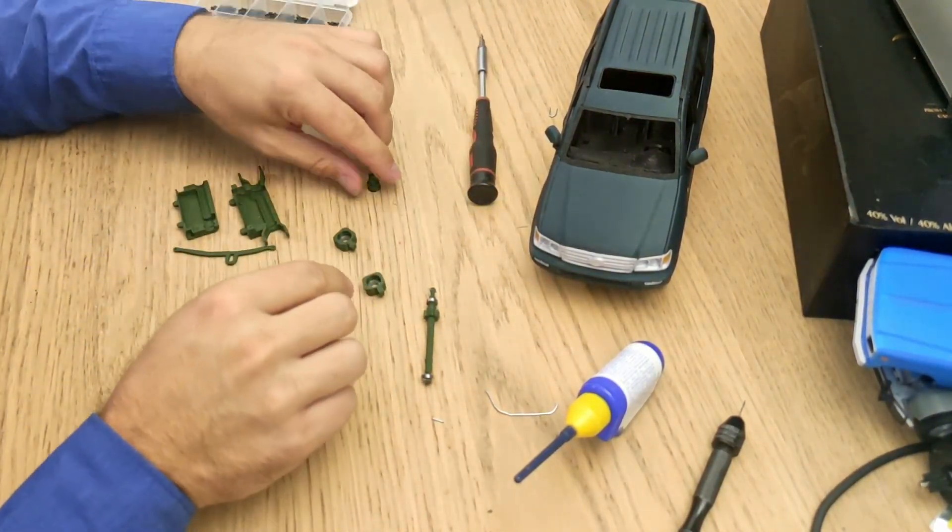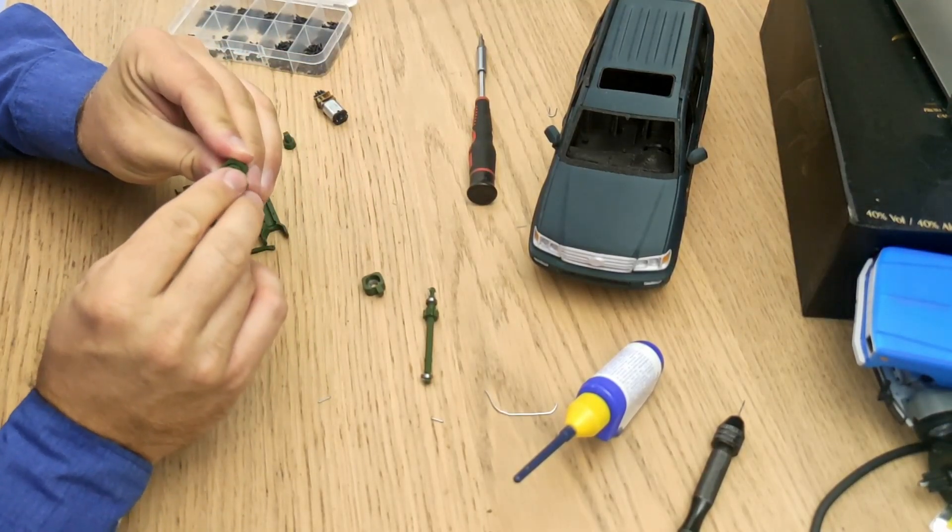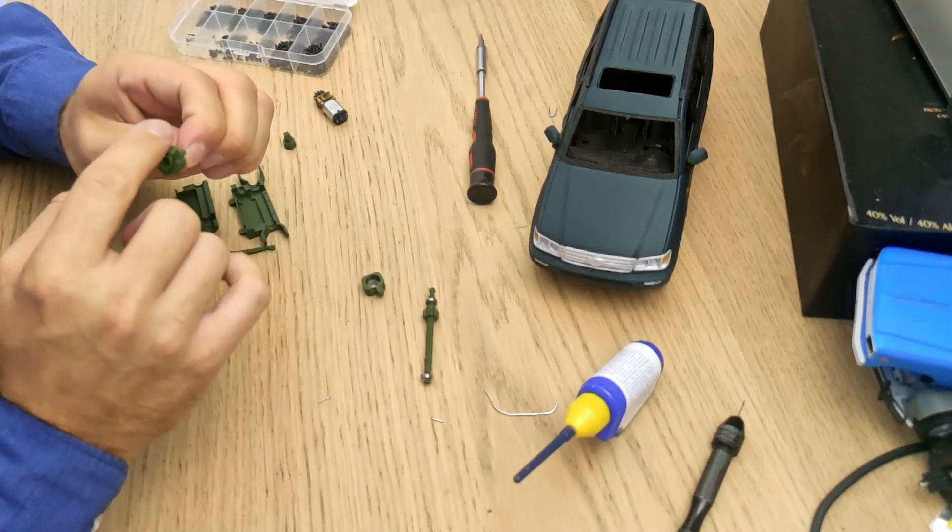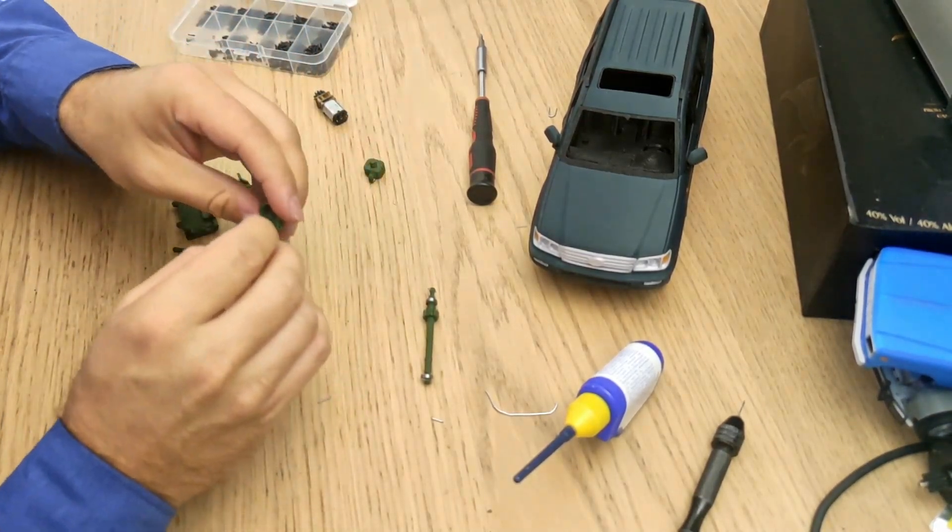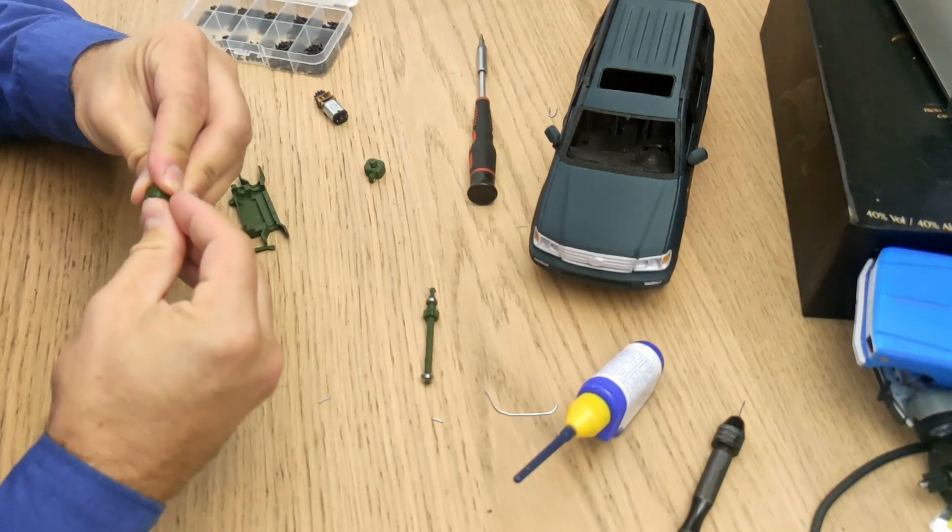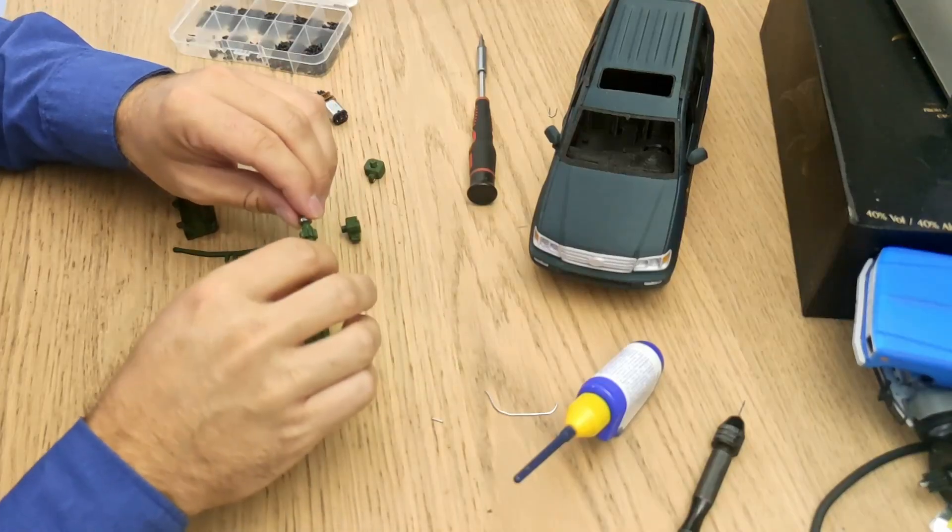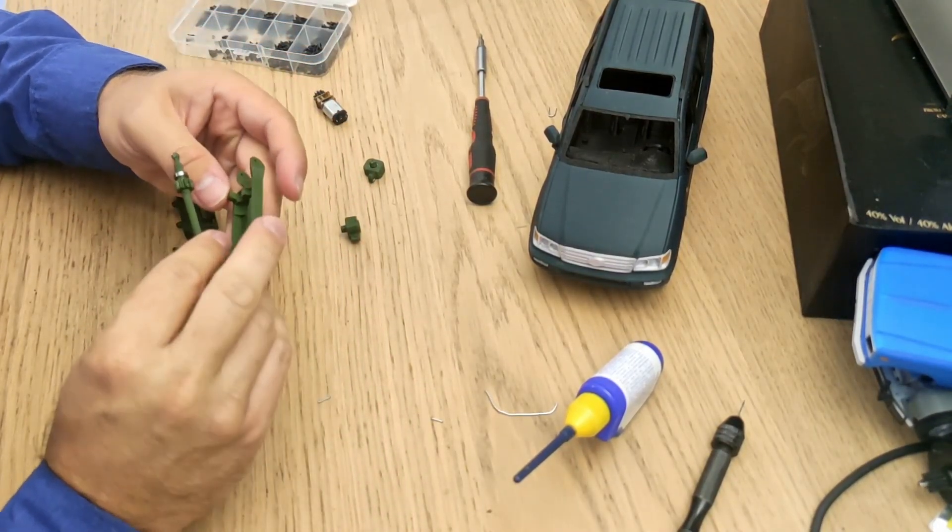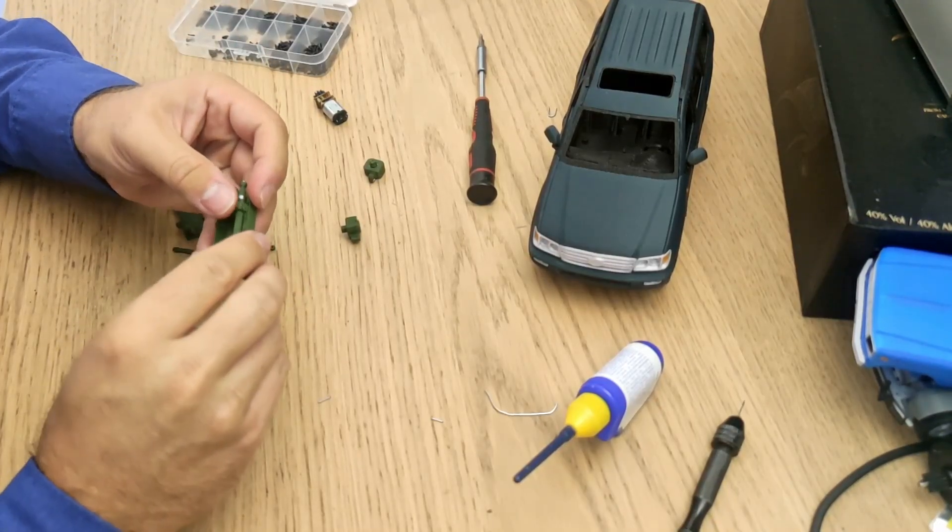So now we need to insert the CV joint which also should go very tightly in there like this and it should rotate freely. That's very very important. Once you are here you want to put the front axle into the front axle holder. Sorry I have some strings like this.